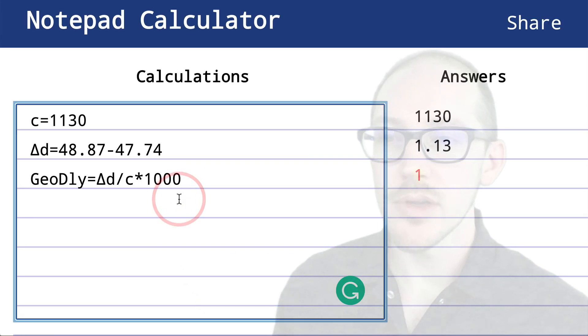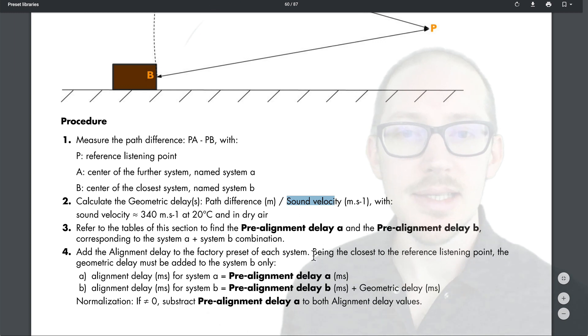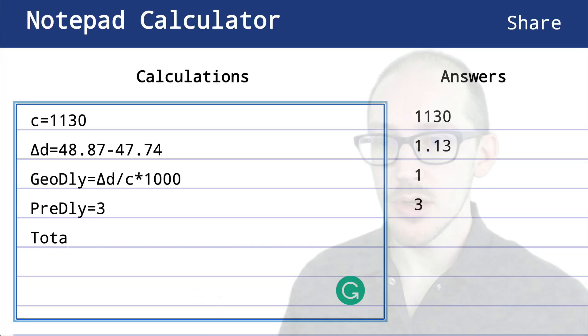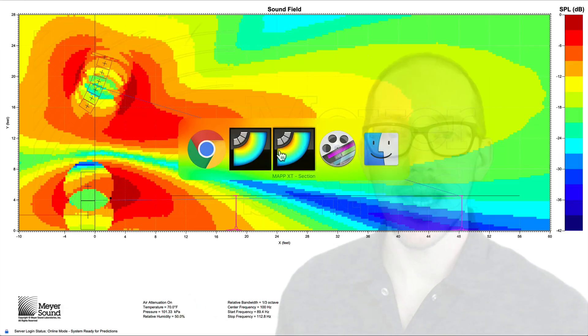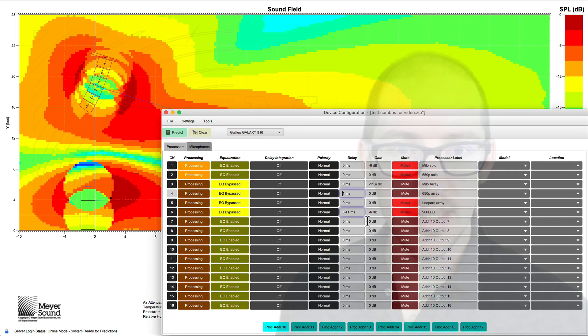Back over here, I'll call this pre-delay and say that's three. And then if we look at this guide, it says all we need to do now is align the pre-alignment delay with the geometric delay. So I'll call this total, my pre-delay plus my geo delay, and I get four. Let's try putting that in there.